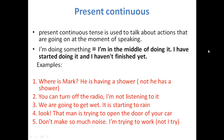Present continuous tense is used to talk about actions that are going on now, at the time of speaking. So when I say 'I am doing something,' it means I am in the middle of doing it — I have started doing it and I haven't finished yet.